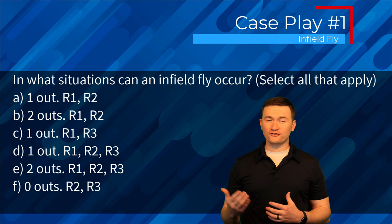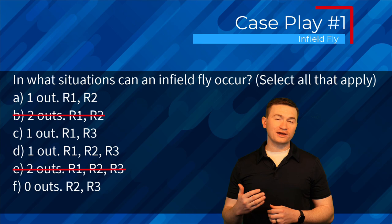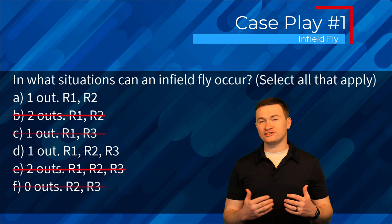Case play number one: in what situations can an infield fly occur? First, look at how many outs there are — anytime there are less than two outs, we can have an infield fly; with two outs there is no possibility. Then look at where the runners are: an infield fly can only occur with runners on first and second, or first, second, and third.